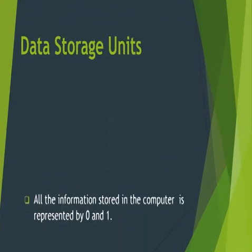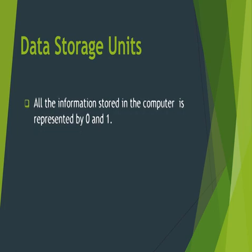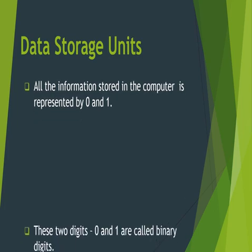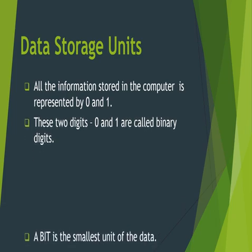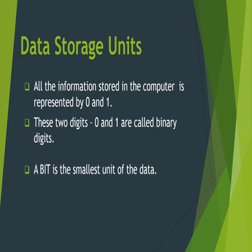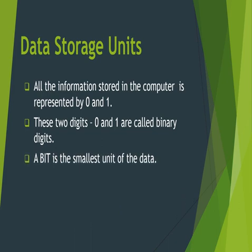Now let's continue learning how computers store data. To store data we need data storage units. All the information stored in a computer is represented by zeros and ones only — a computer can only understand zero and one; it does not understand any other character or number. These two digits, zero and one, are called binary digits. The measurement unit used to describe these binary digits is 'bit,' which is short for binary digit, and a bit is the smallest unit of data.